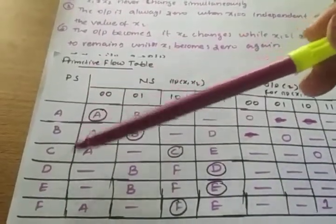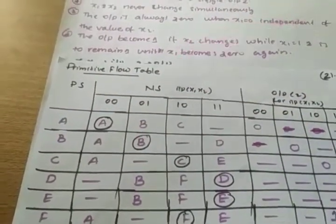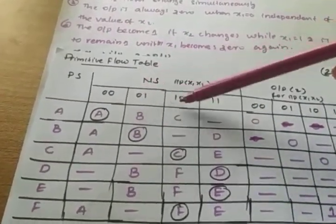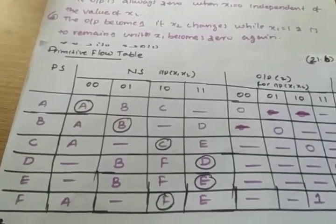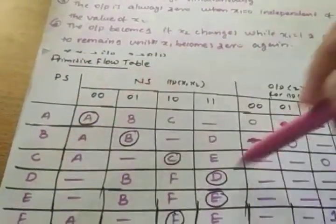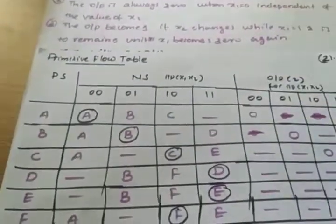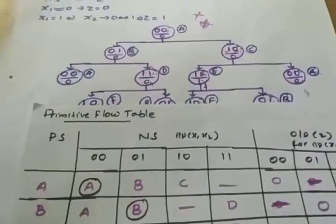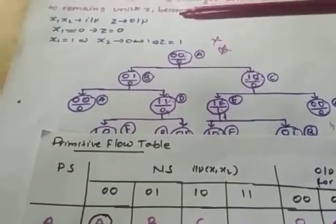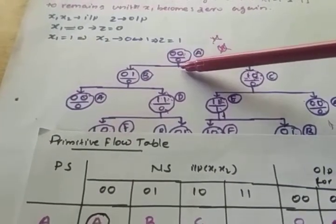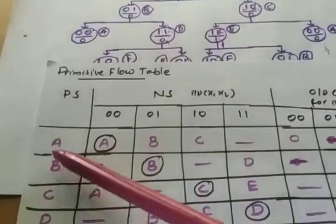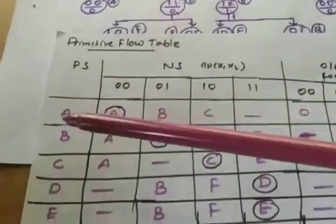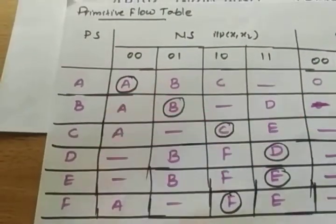The present states are a, b, c, d, e, f. The next state is defined for inputs x1, x2: 0,0 — 0,1 — 1,0 — 1,1. Output is also defined. Before drawing the primitive flow table, you first need the flow diagram. Initially it starts from 0,0. So first you draw states a, b, c, d — up to f you have defined the states: a, b, c, d, e, f.